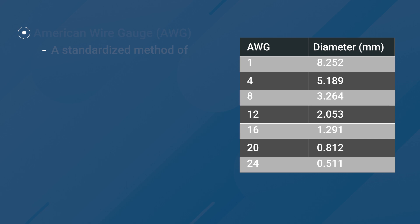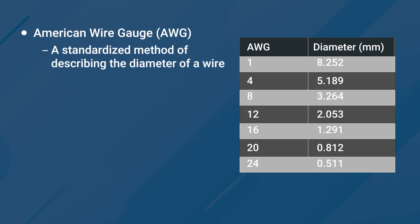When it comes to wiring, the most important information to communicate is the diameter of the wire. The American Wire Gauge is a standard that numerically identifies the diameter of common wire sizes. In basic terms, the lower the number, the larger the diameter. Refer to the chart on the right side for some examples.